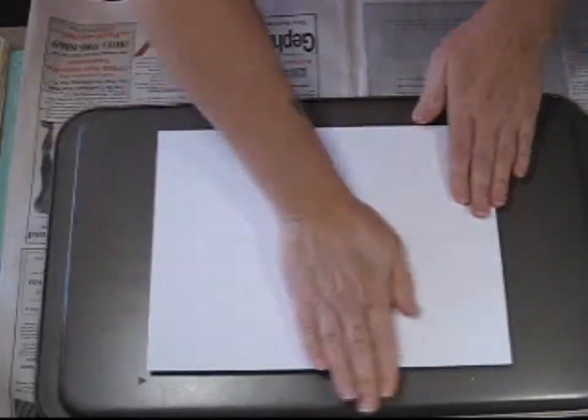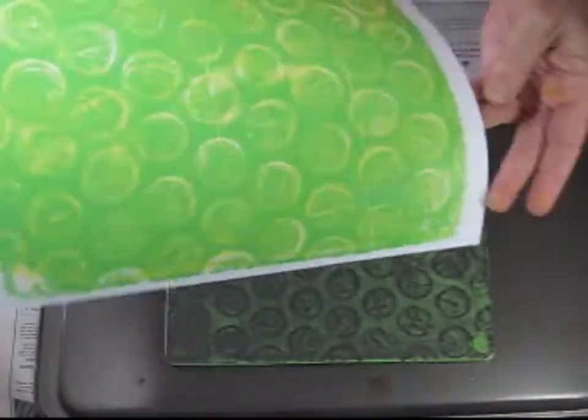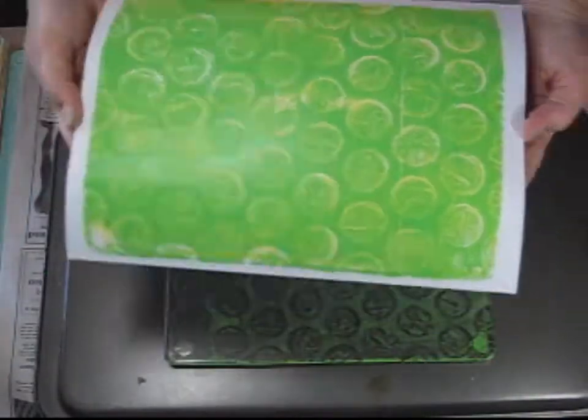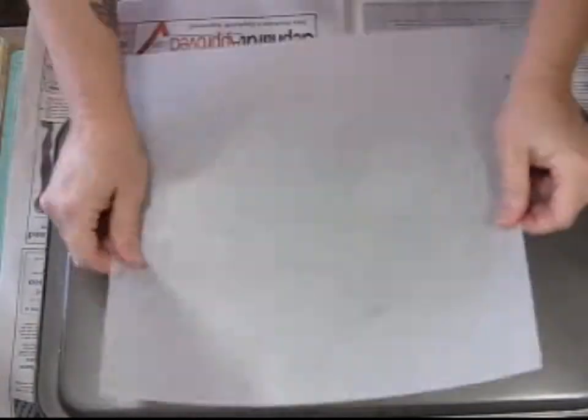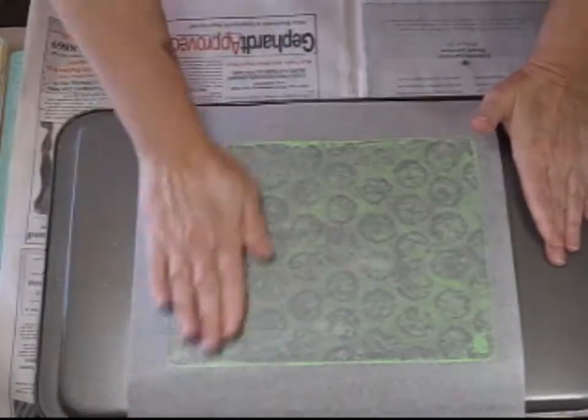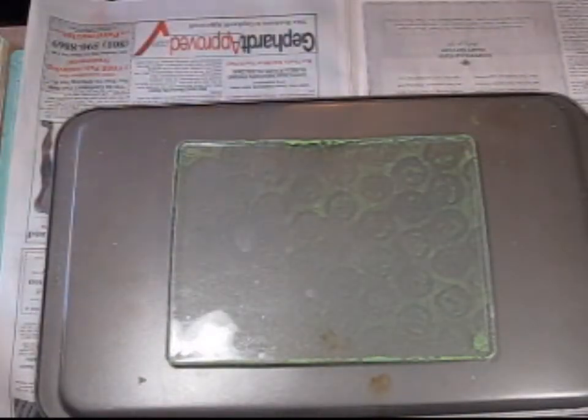So I'm going to take some paper, rub it down. You can also use the brayer to add some weight to it when you're imprinting. And now I'm going to use a piece of the deli paper. And you can see it's not much of a print, but it will add some of the layers to it.